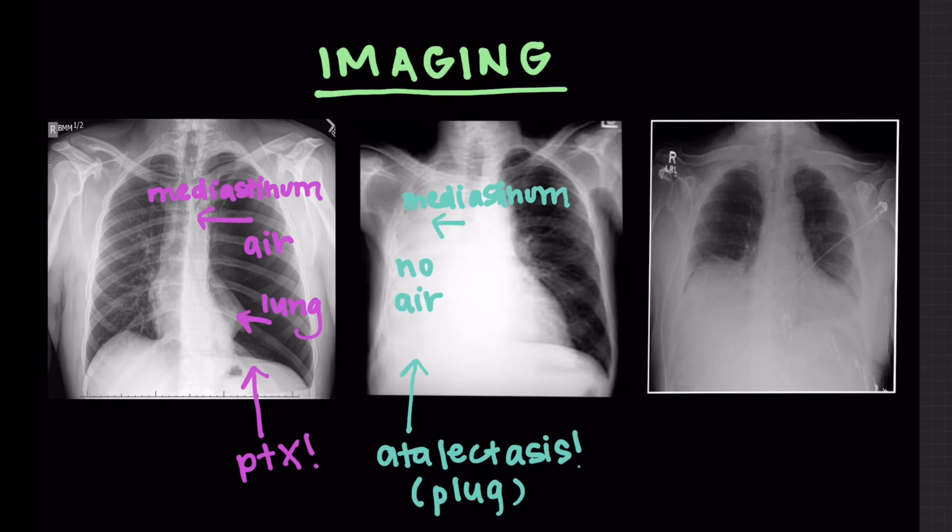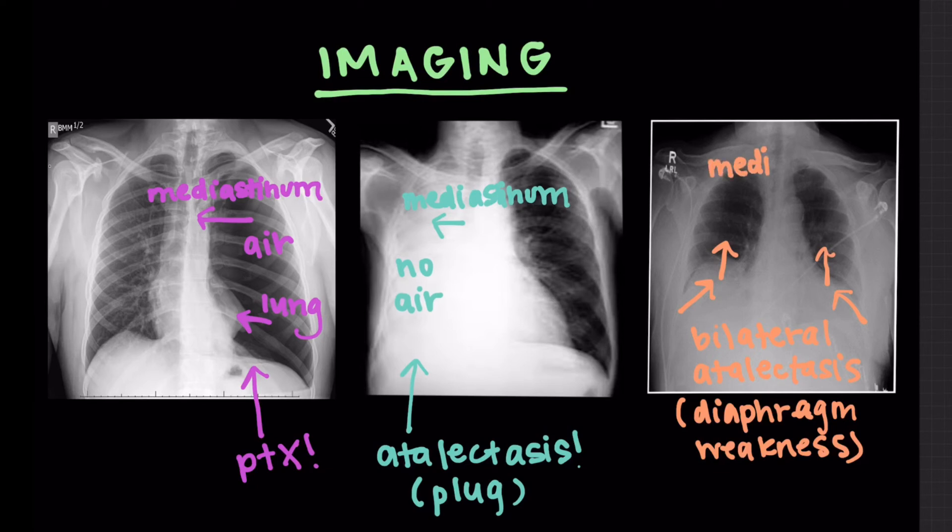So lastly, this is just a picture of what we call bilateral atelectasis, meaning it's happening on both sides. It's probably from sort of a diaphragm weakness, or you could see this in obesity as well. I just wanted to show you this picture to see that they have small lung fields. The mediastinum stays in the middle because it's symmetric.